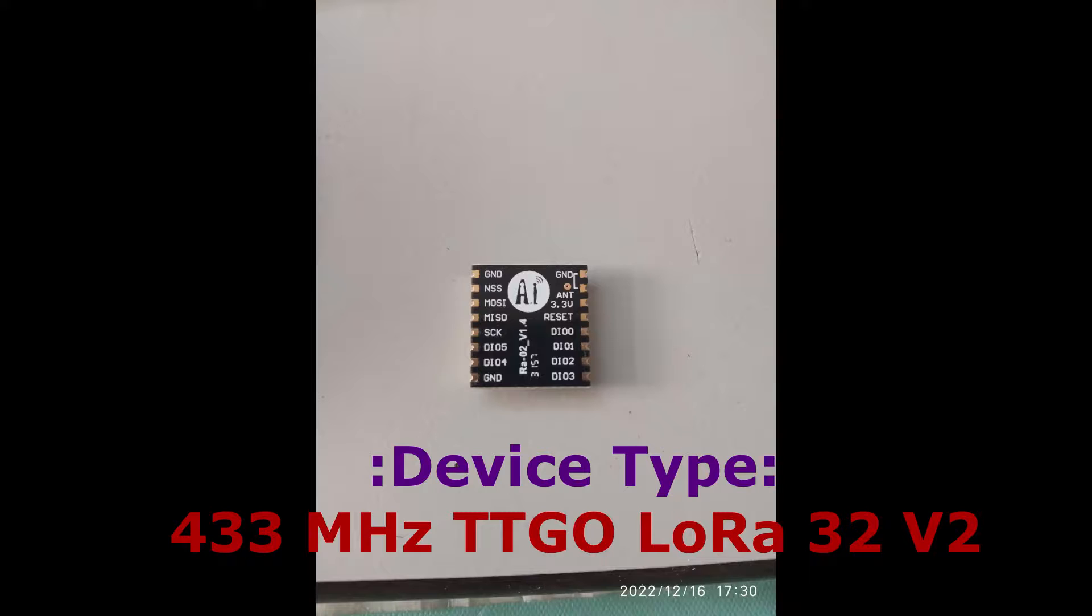While configuring the ground station, select the option under the device type as 433 megahertz TTGO LoRa32 V2 if you are using the same module.